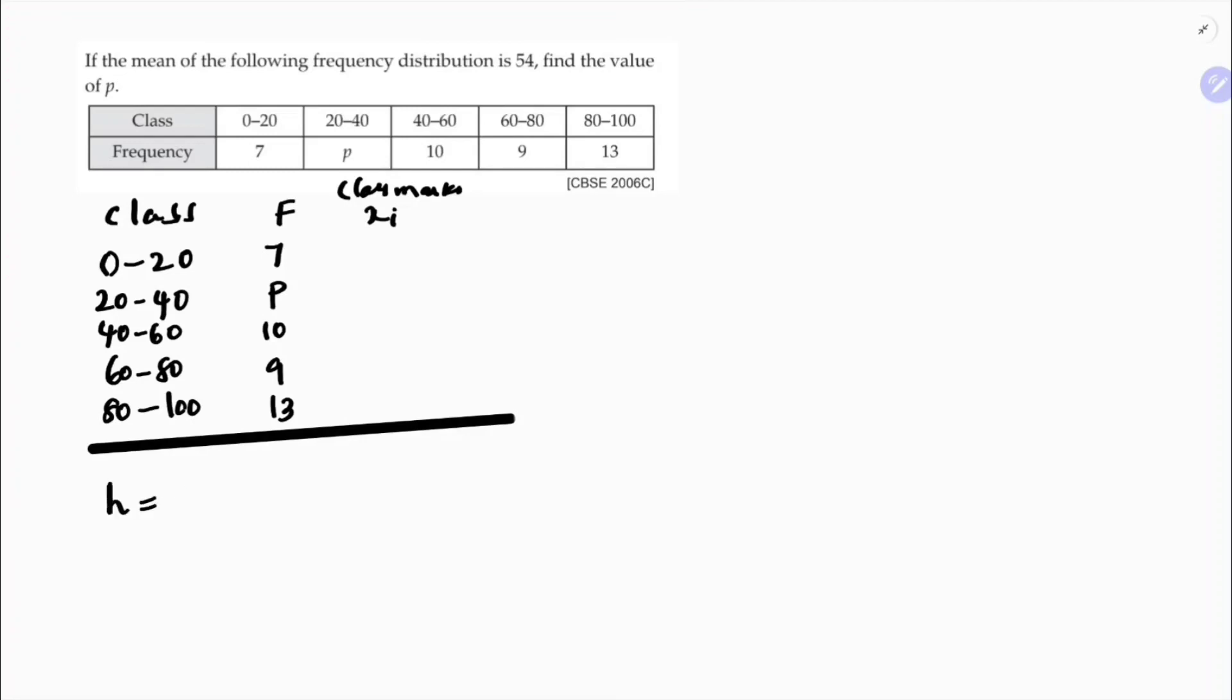h is class size. Class size is, just subtract like this, like 80 minus 60, which is 20. So class size is 20. So now class marks, these two, lower boundaries and upper boundaries, these two values we need to add them. And make it half like, 0 plus 20 is 20, 20 by 2 is 10.